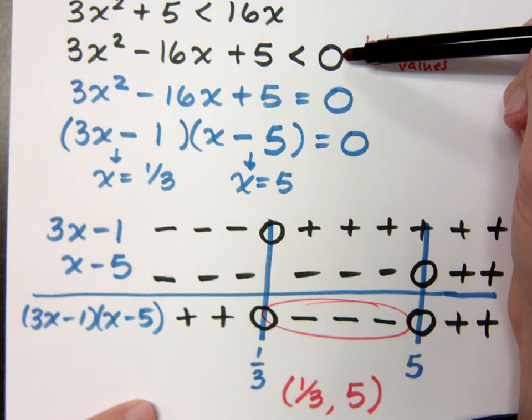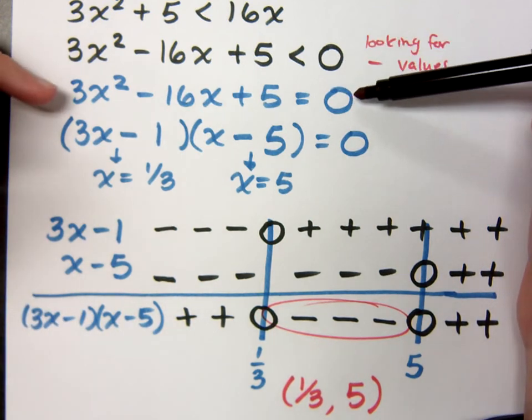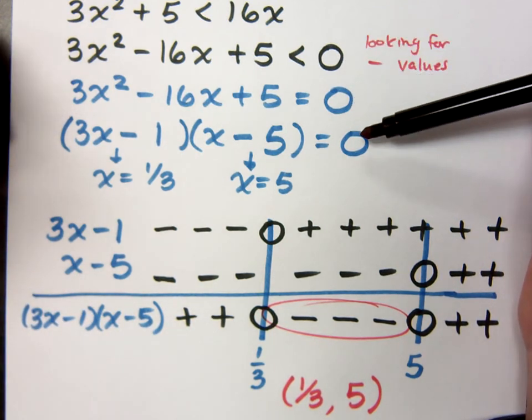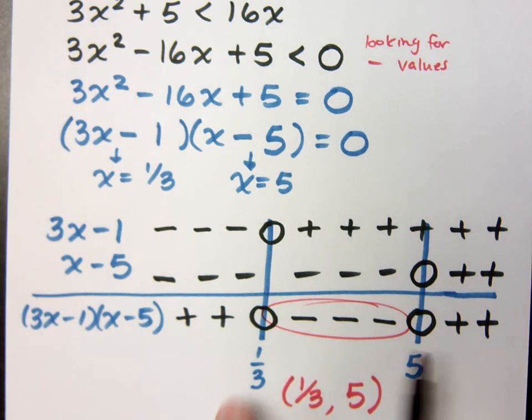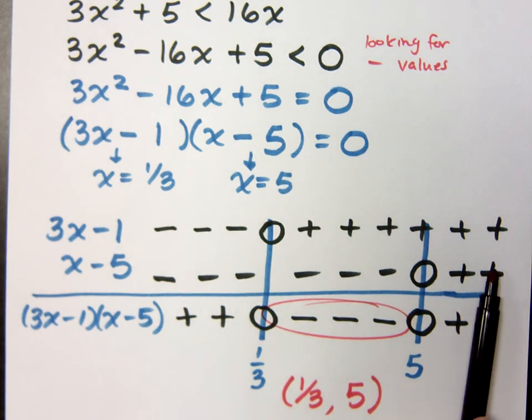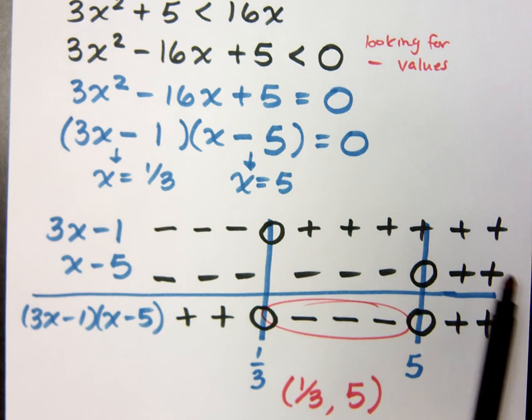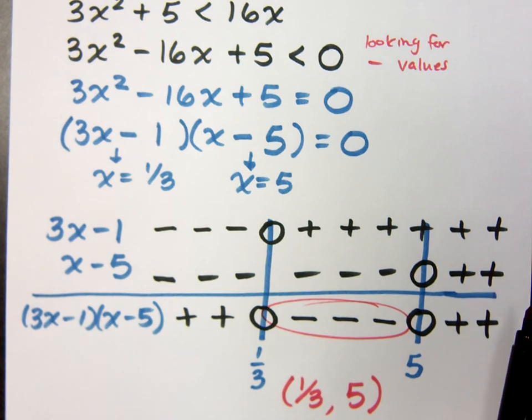This is my original inequality up here. I rewrote it to be this guy, and then I converted it to an equation so I could figure out what are those critical values, what are the gatekeepers. Once I found the gatekeepers, I was able to identify my intervals, and I just used my signs. I used the sign analysis.